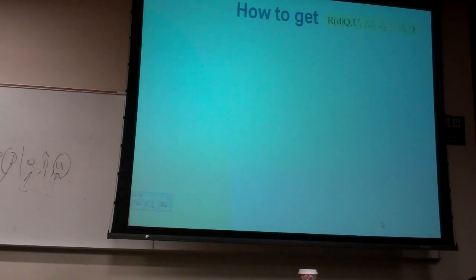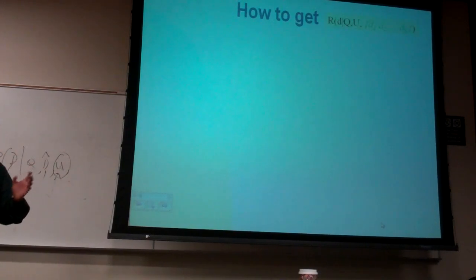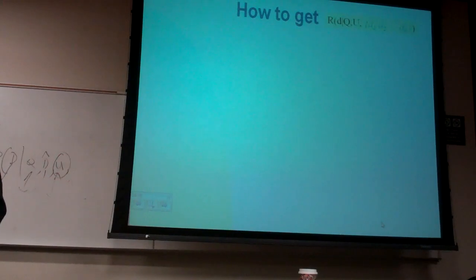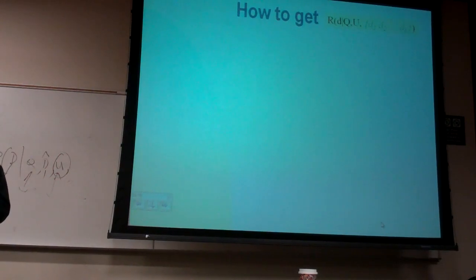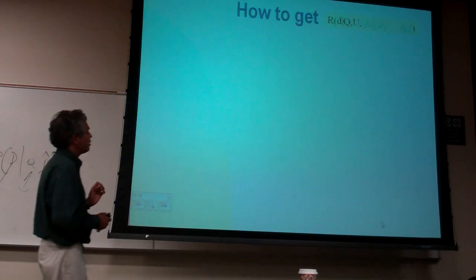Remember the difference between a computer scientist and a programmer? A programmer will just do what can be done. A computer scientist will spend the first half a day without writing a single line of code, thinking what's the right way to do it. And then obviously write a program in the next half of the day. But the important thing is you would have understood what is the right way to do it.